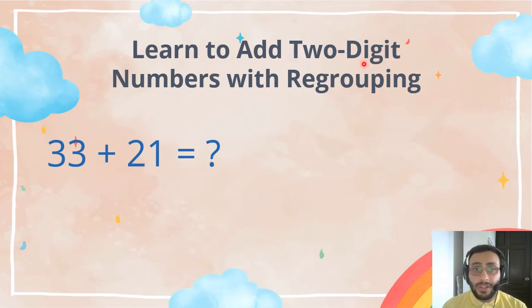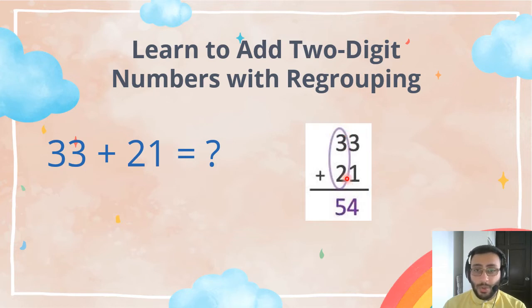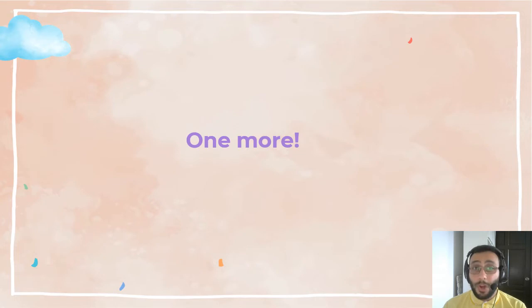Learn to add two digit numbers with regrouping. So, this one has regrouping. Does it? Let's see. 33 plus 21. We start to add 3 plus 1, which is 4. 3 plus 2 is 5. So, the answer is 54. Hey, this one had no regrouping. Very easy. But, let's do one more.